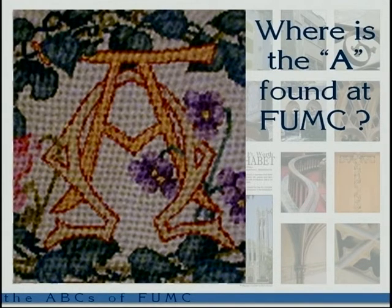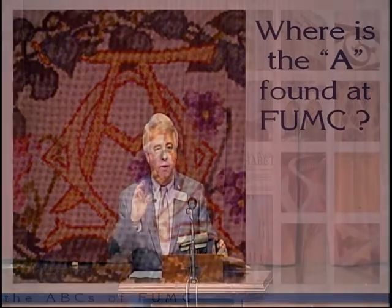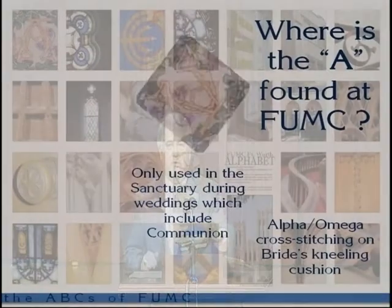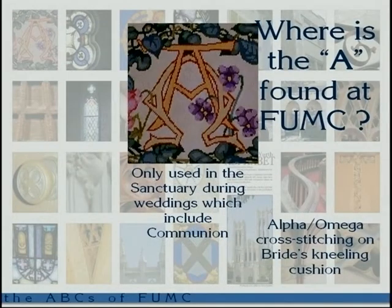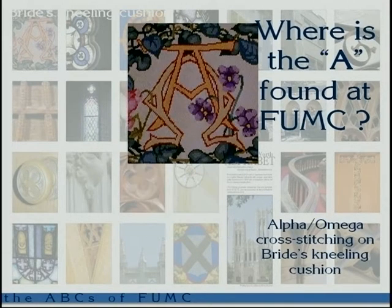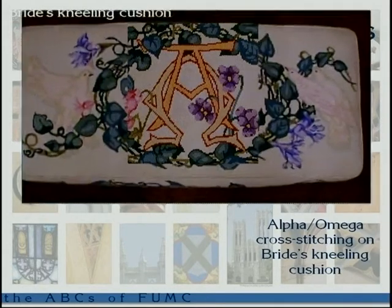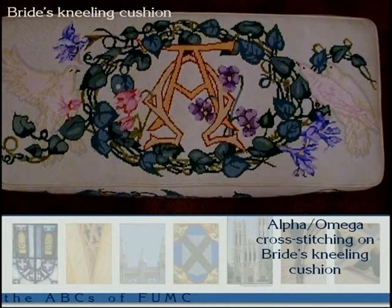So, where's the A found? Kneelers — but if you go in the sanctuary you can't find it, because it's not on the regular kneelers. It is on the bride's kneeler. The bride's kneeler and the groom's kneeler are only used during communion at a wedding, so they're kept in a closet. Unless you come to a wedding, you cannot see the Alpha and Omega stitching. Here's a picture of the whole bride's kneeler — a lot of symbolism with the Alpha and Omega, the flowers and the fruit, the doves.